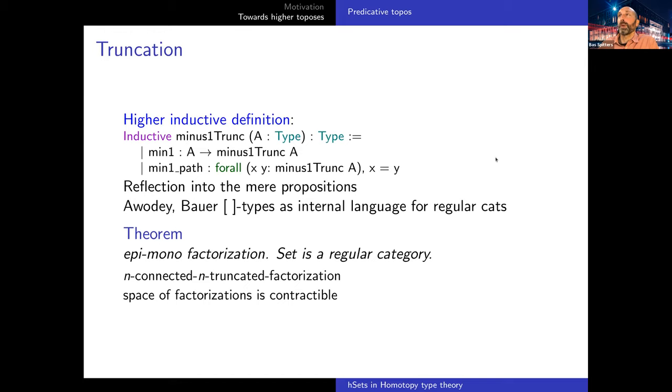There's a language for what are called regular categories. Those are categories where you have an image factorization. In sets, every map from A to B factors via the image of the function, an epi and then a mono from this image into the codomain. The observation here is that having such a truncation is precisely enough to define this image.